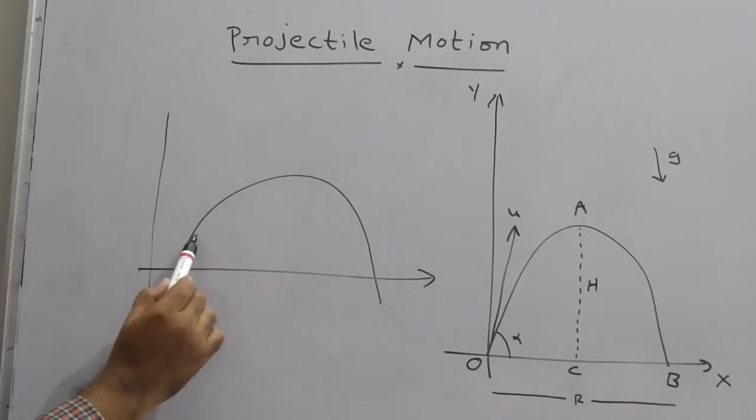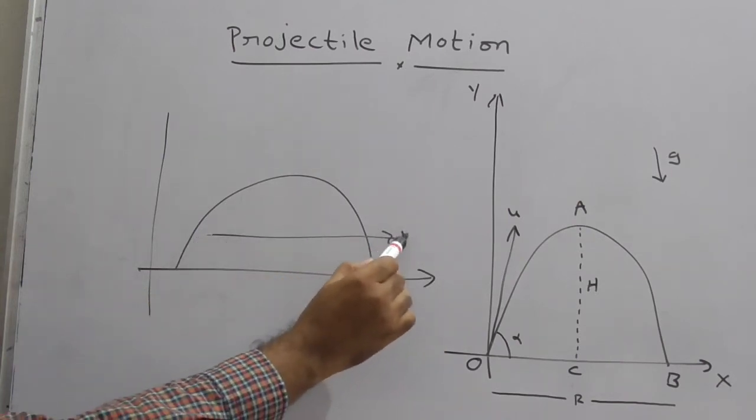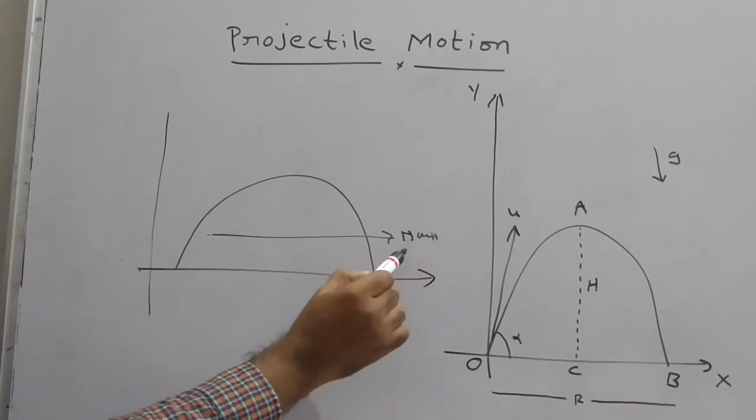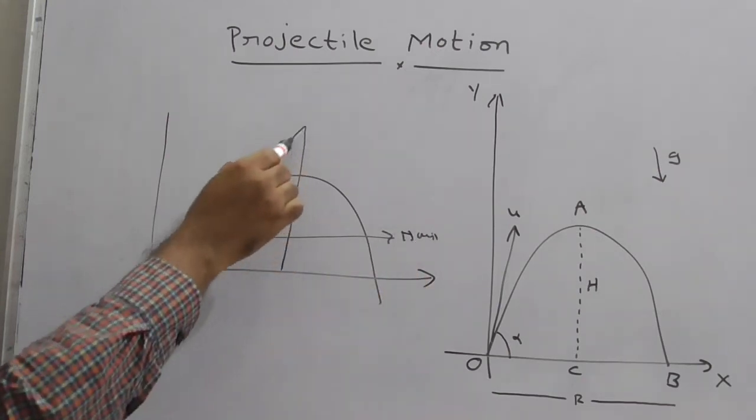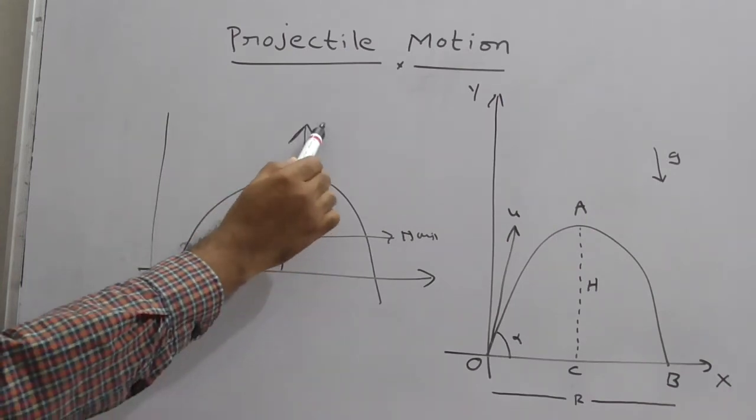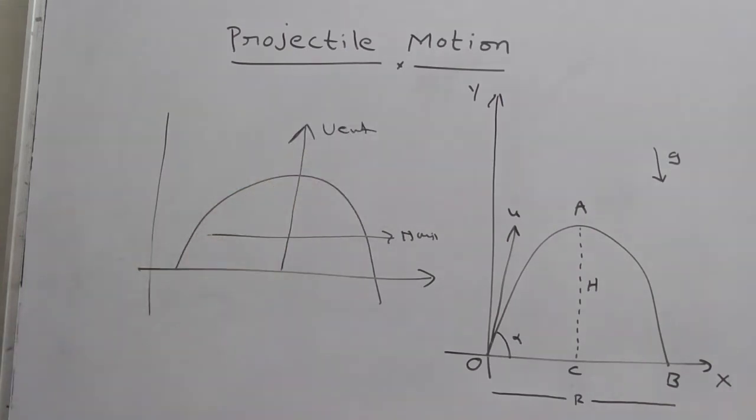For example, if you observe here, for this motion you can find a horizontal motion in this direction. This is horizontal motion. Similarly, in the upper direction, this is vertical motion. The projectile motion is a two-dimensional motion because here you can find two types of motions: one is vertical and another one is horizontal.